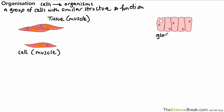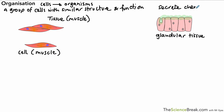Here is another example of a tissue: glandular tissue. Glandular tissue will secrete chemicals depending on where it is in the body — it could be hormones or enzymes, but the main job is to secrete chemicals. So that gives us two types of tissue.